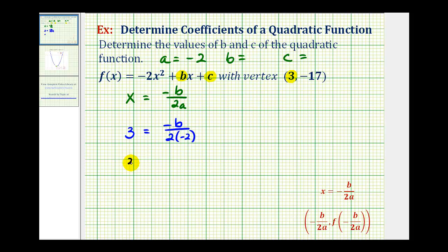So here we would have three equals negative b divided by negative four. Well, a negative divided by a negative is positive. So we have b divided by four, and multiplying both sides by four, we can see that b must equal positive twelve. Let's go ahead and record this. We know b is twelve.